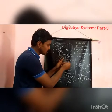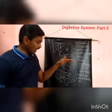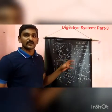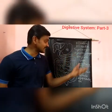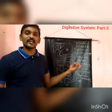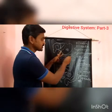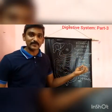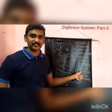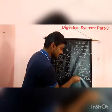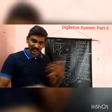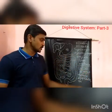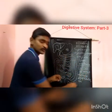Inside the jejunum region, the intestine secretes intestinal juice, also called succus entericus. So we have three juices: bile juice, pancreatic juice, and intestinal juice secreted by the intestine itself. Intestinal juice contains numerous enzymes like maltase and dipeptidase, which further convert complex compounds into simpler ones.